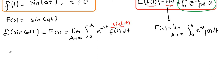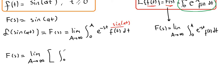So f of s is equal to the limit as capital A approaches infinity of the integral from zero to A of e to the negative st times sine of at dt.